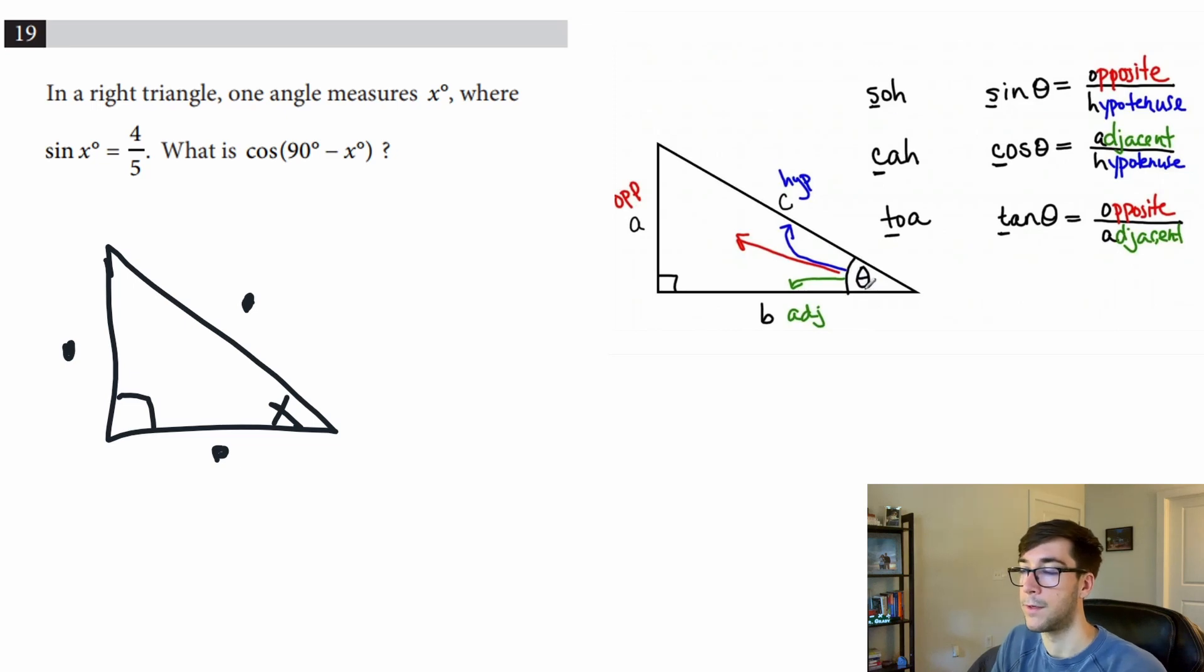So we're talking about sine, and I'll start writing in blue for sine. Over in the top right we see that sine is opposite over hypotenuse.